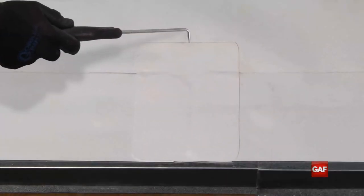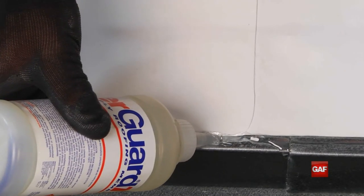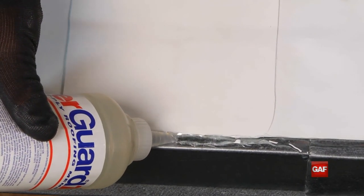probe the patch to ensure your welds are free of any voids. Finish by applying Evergard cut edge sealant up to the joint patch.